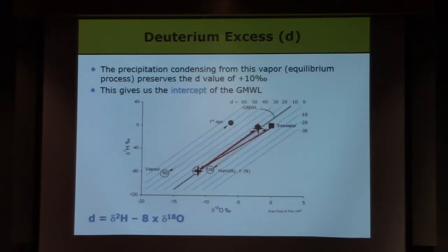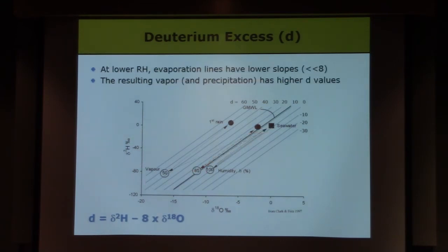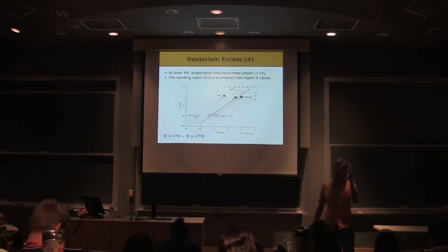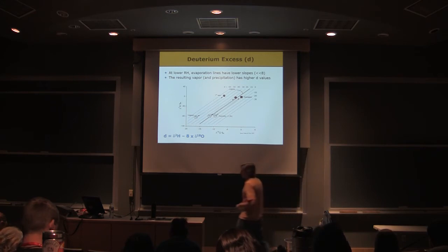All right, so then we're producing moisture, or sorry, rain that falls along this line through an equilibrium process. And the rest is history. All right, one more thing before our next break. So again, the slope of the evaporation line in HO space is going to depend on the humidity.